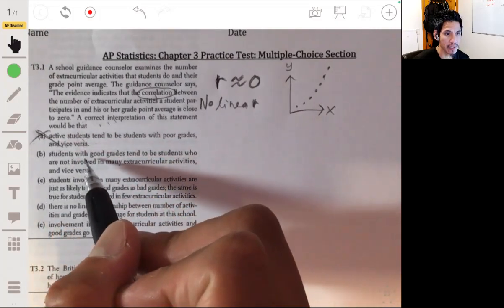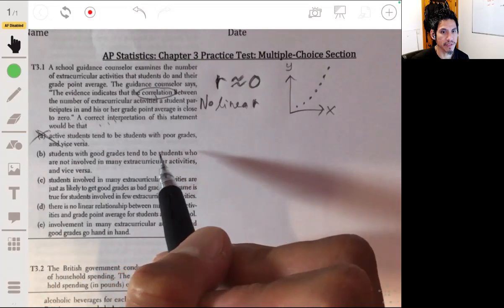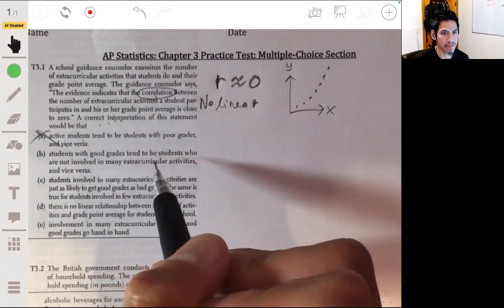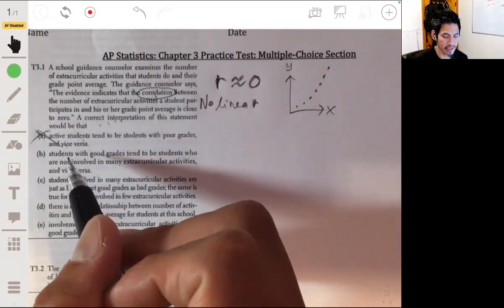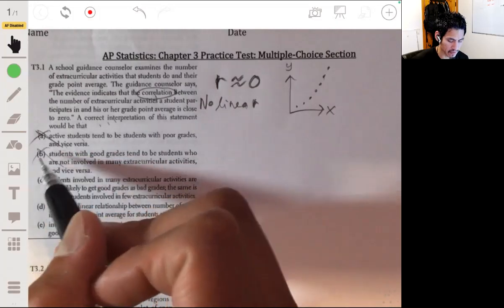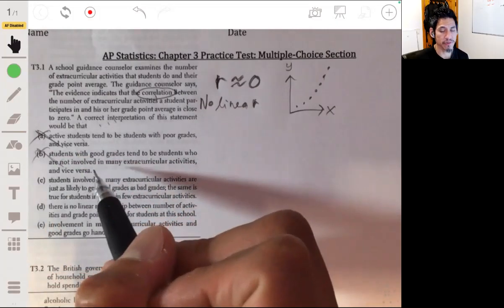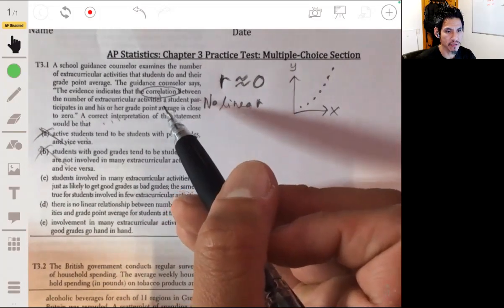Option B: students with good grades tend to be students who are not involved in any extracurricular activities, and vice versa. Again, this is kind of another case of a relationship. This could be true, maybe true, but we can't say that for sure from this information.